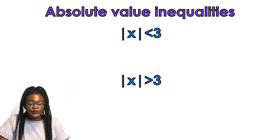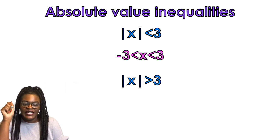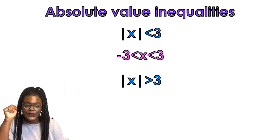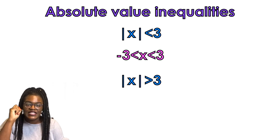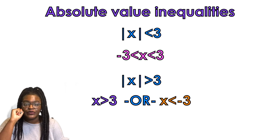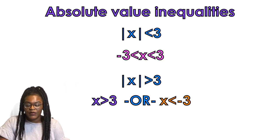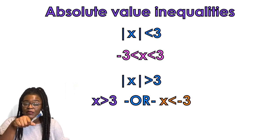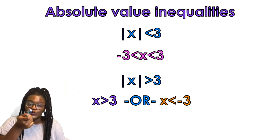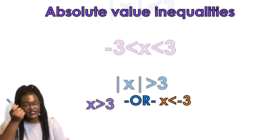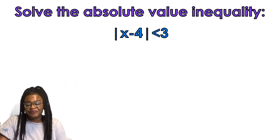Absolute value inequalities. If you get an absolute value inequality that is less than three, you reformat that to drop the absolute value symbols as: negative three is less than x and x is less than three. That's an and inequality. And if you have an absolute value where x is greater than three, then you reformat that to an or inequality: x is greater than three or x is less than negative three. Because remember, absolute value is the distance from zero — it could have started off as a negative number or a positive number.